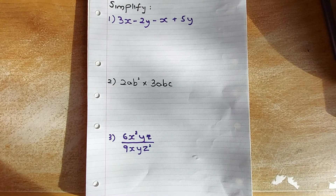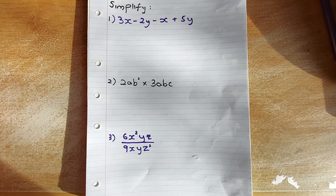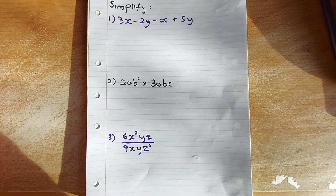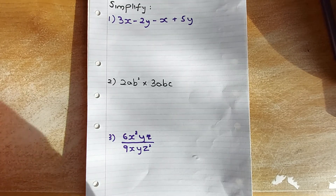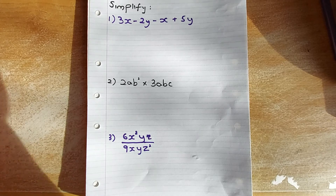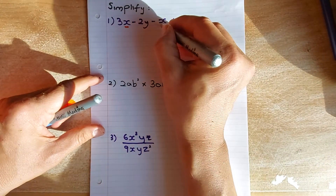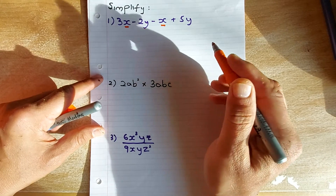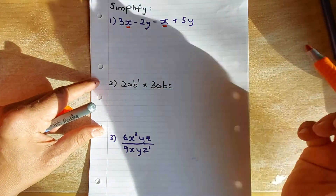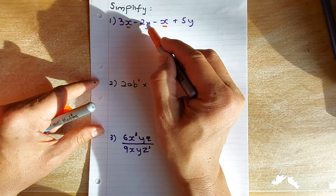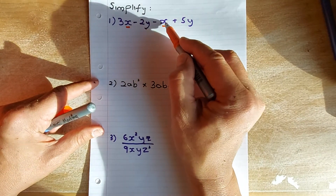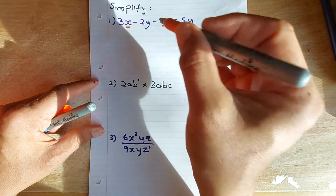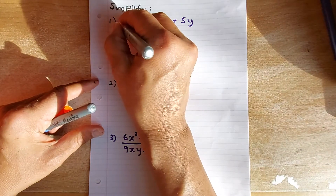The first question is about like terms. When asked to add or subtract an algebraic expression, you have to look for the same family. The x and the x are the same family, and the y and the y are the same family. Note that this minus belongs to 2y, this minus belongs to x, and this plus belongs to 5x. If there's nothing, put a plus.